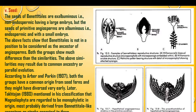Both groups show more differences than similarities, and the above similarities may also result due to common ancestry or parallel evolution. Common ancestry means a single first land plant which developed into pteridophytes, then evolved into gymnosperms, and those gymnospermic plants also evolved into angiosperms. That is the concept of common ancestry and parallel evolution.